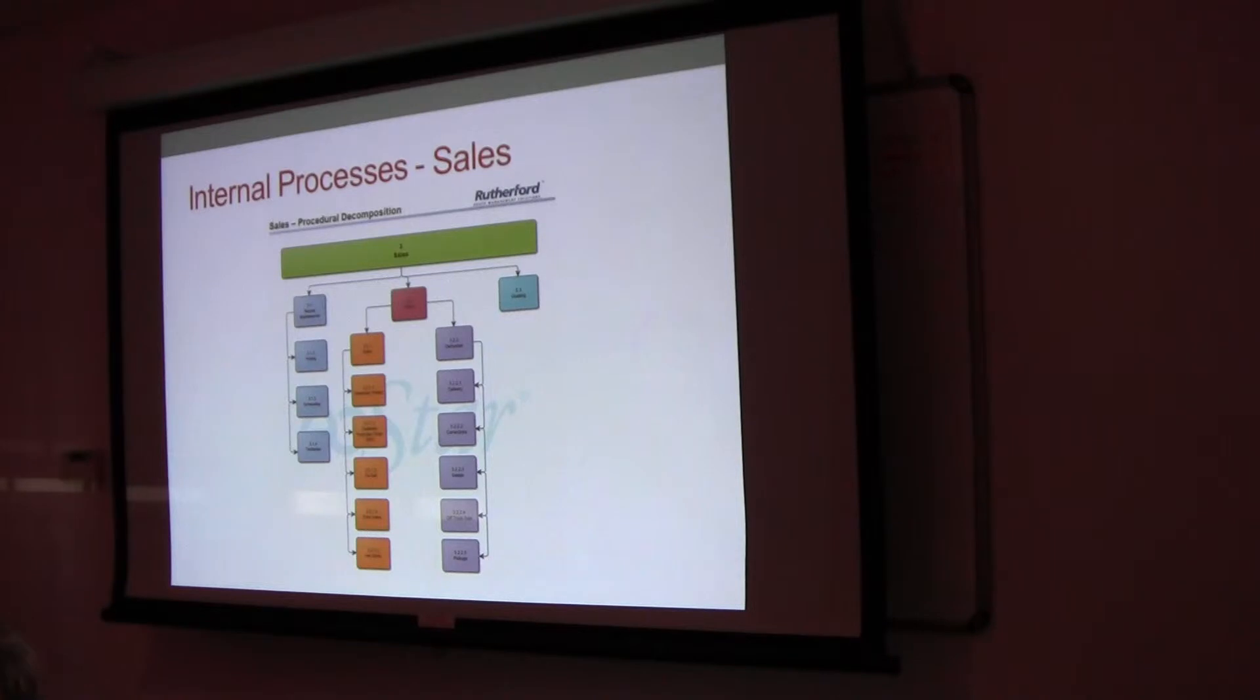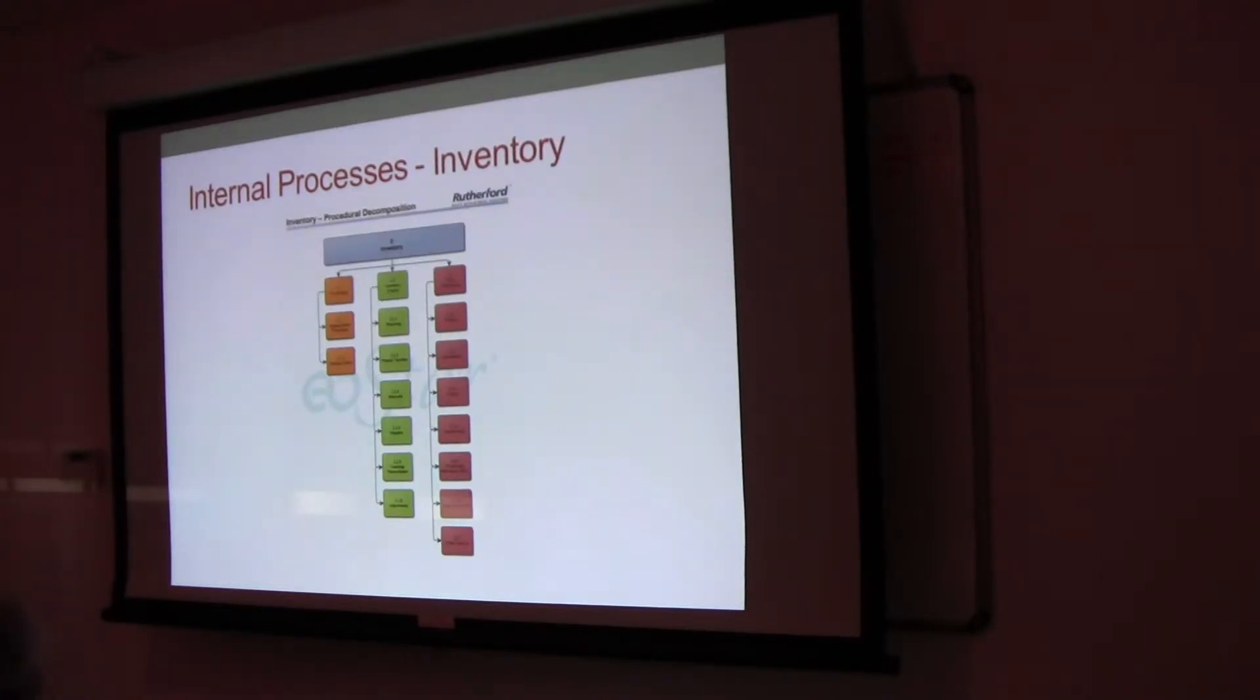So we have sales processes, we have inventory processes - again, these are the standard elements from getting the product, managing your inventory, and when you receive orders, how do we get the stuff on the truck? There's a variety of ways of accomplishing this.